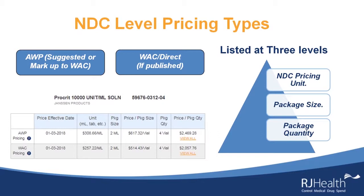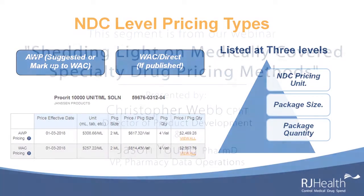For something like Remicade, which is an SOLR (reconstituted solution), all the pricing levels are the same. The pricing unit is based on EA (each), the package size is the vial, and the package quantity is that same vial, so the price is the same across all levels. When looking at NDC-level pricing, always make sure you're looking at the correct level — pricing unit, package size, or package quantity.